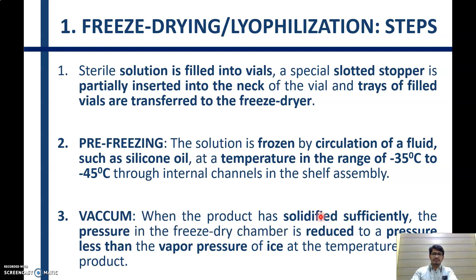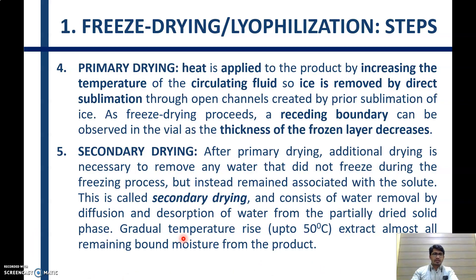Then a vacuum is applied. When the product has solidified sufficiently, the pressure in the freezing chamber is reduced to a pressure less than the vapor pressure of ice at the temperature of the product. After that, primary drying begins — heat is applied to the product by increasing the temperature of the circulating fluid. Ice is removed by direct sublimation through the open channels created by prior sublimation. As freeze drying proceeds, a receding boundary can be observed in the vial as the thickness of the frozen layer decreases.